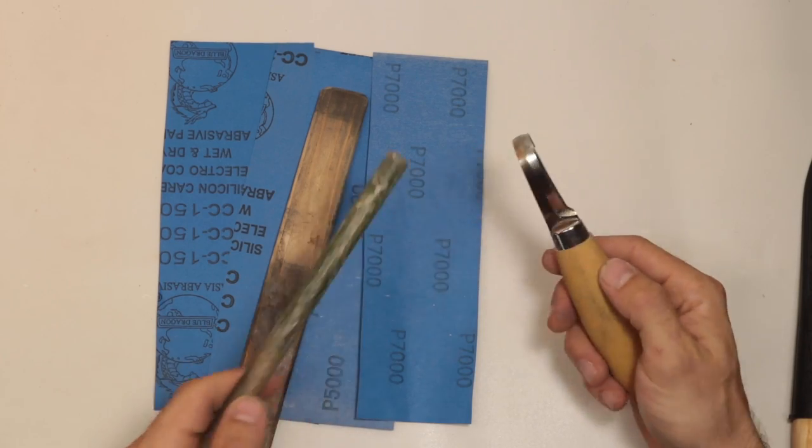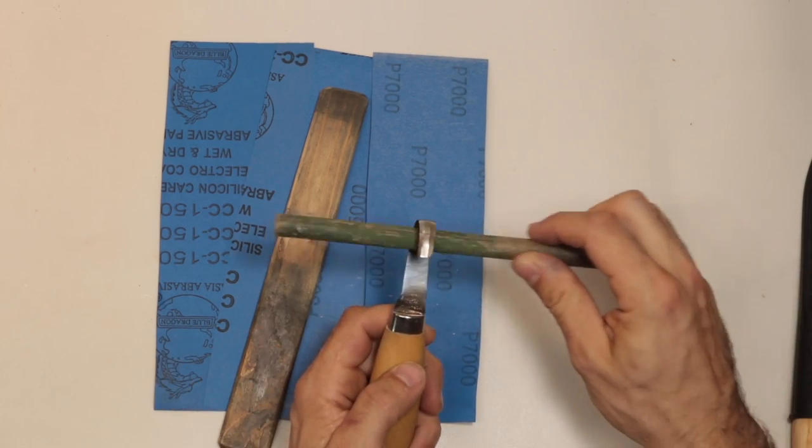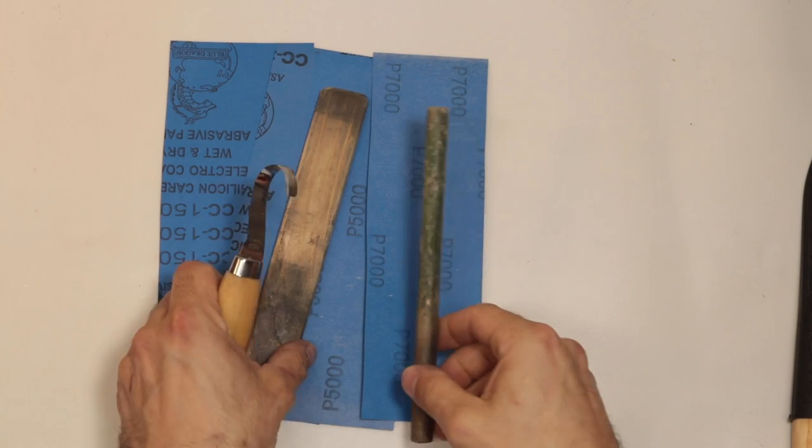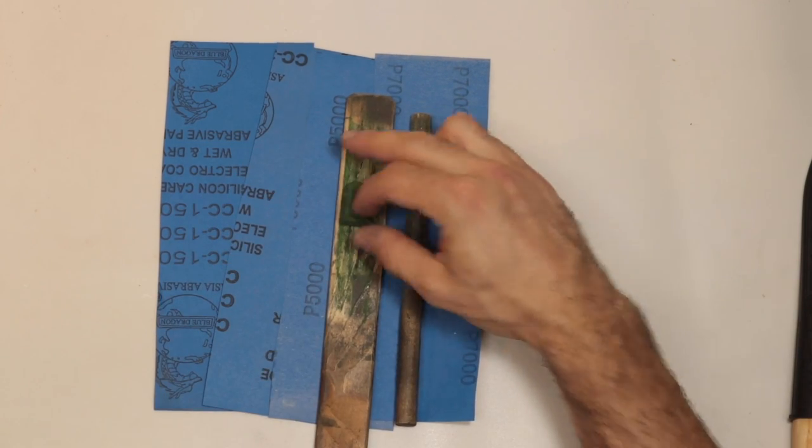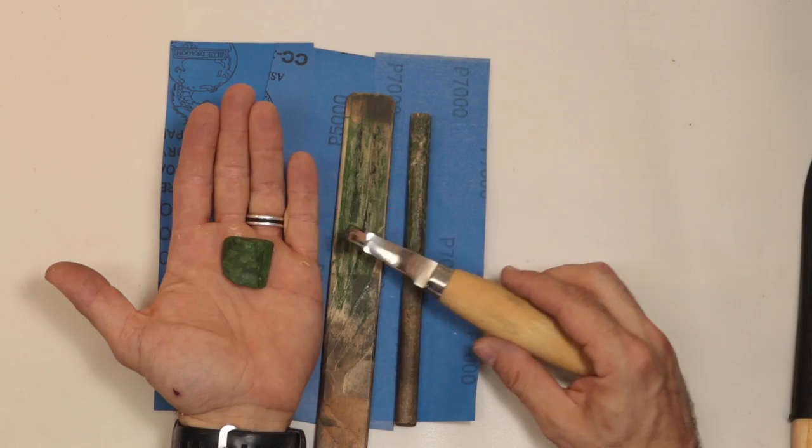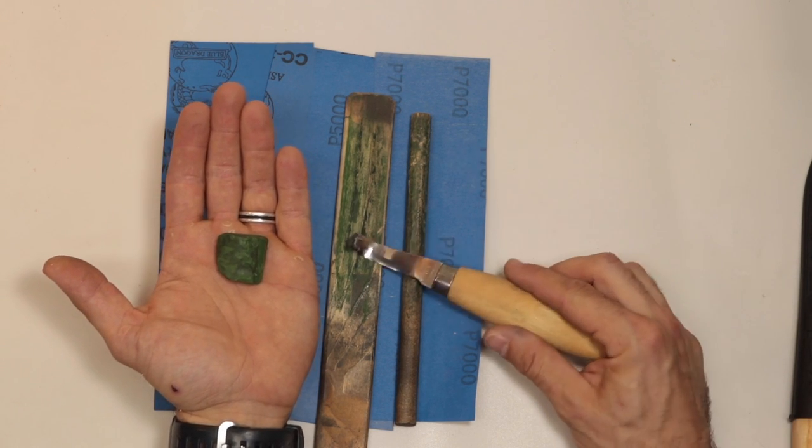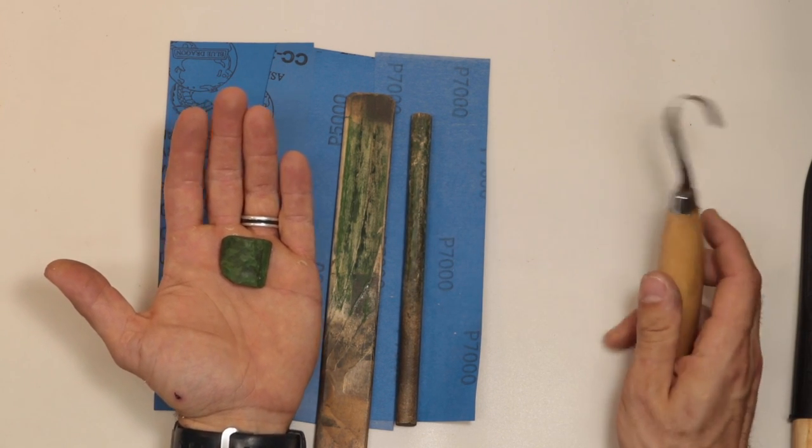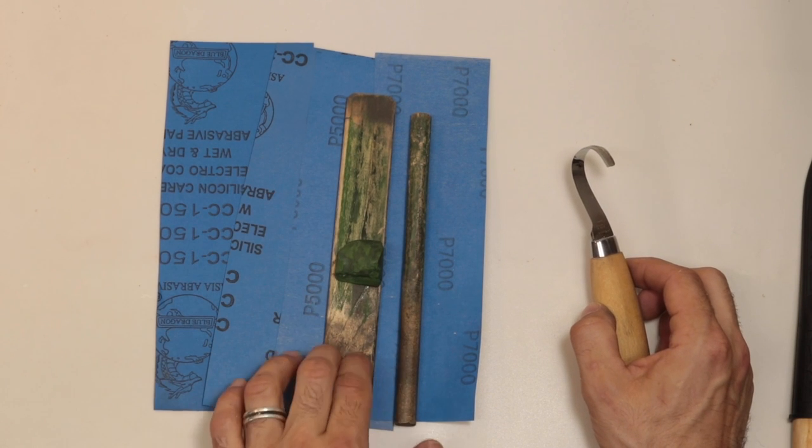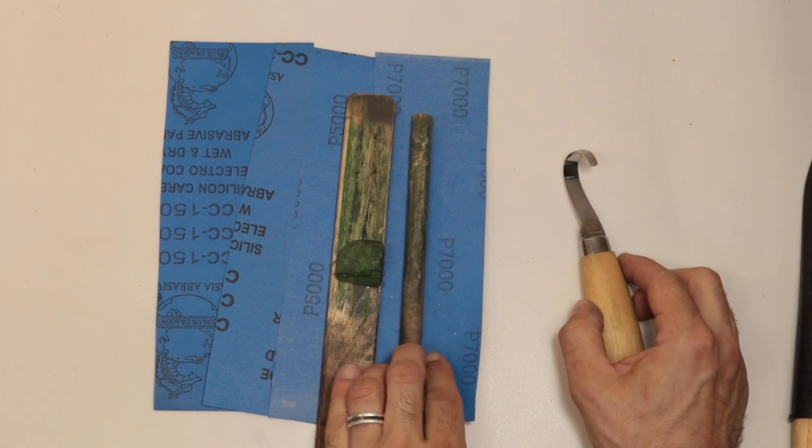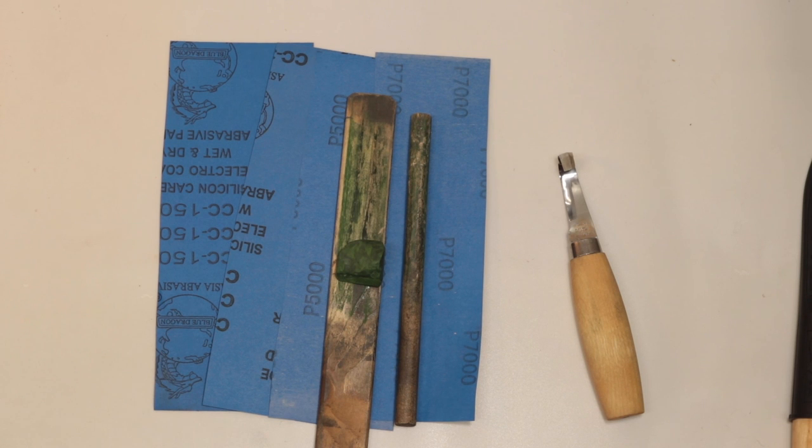You can also see I've put some green honing compound straight on top of these wooden pieces, so these are now my strops as well. So some sandpaper, a flat piece of wood, a round piece of wood, green honing compound, and you can start sharpening your tools as well.